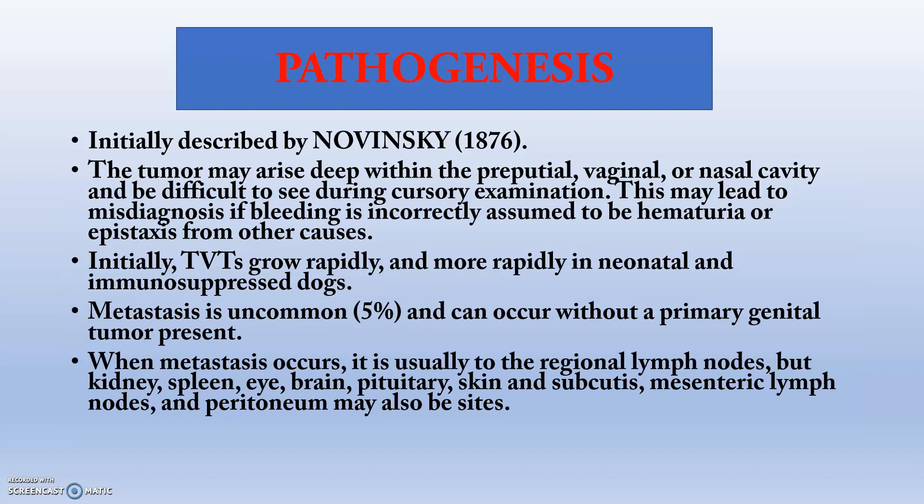Pathogenesis was described by Nowinski. The tumour may arise deep within the preputial, vaginal, or nasal cavity and be difficult to see during cursory examination. This may lead to misdiagnosis if bleeding is incorrectly assumed to be hematuria or from any other causes. TVT grows rapidly, and more rapidly in neonatal and immunosuppressed dogs because immunosuppressed dogs will not have any immunity. Metastasis is uncommon, at nearly 5 percent, and can occur without a primary genital site in 21% of cases.